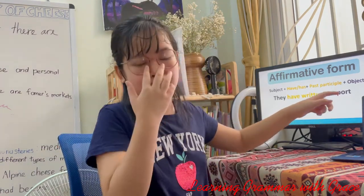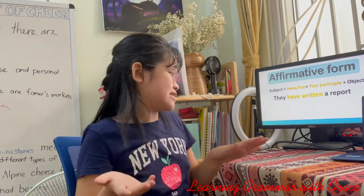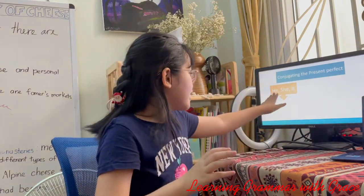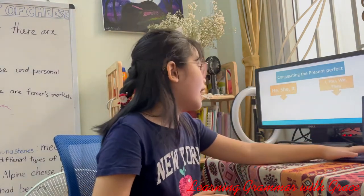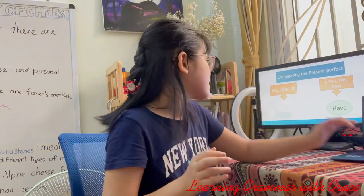There are two types of V3: first it's V0 plus -ed, or an irregular verb — so 'written' is an irregular verb. Now, how do you use have or has? Let's conjugate the present perfect. For I, you, we, they — use have. For he, she, it — use has.